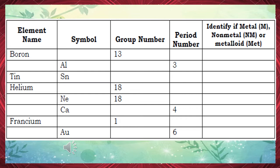Number 5: Element name is neon, period number 1, and it is a nonmetal. Number 6: Element is calcium, group number 2, and a metal. Number 7: Element symbol is Fr, period 7, and it is a metal. Number 8: Element name is gold, belongs to group number 11, and it is a metal.